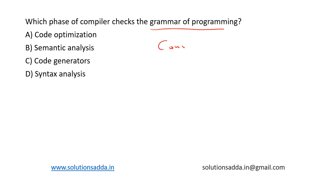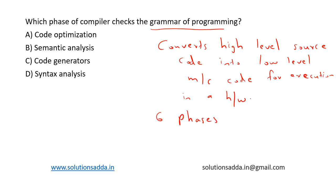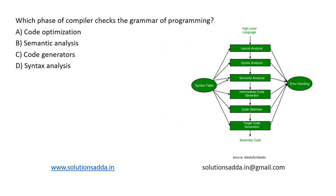So a compiler converts high-level source code into lower-level machine code for execution in hardware. There are different phases in a compiler — in total there are six phases. There are six phases for a compiler, and these are the different phases.